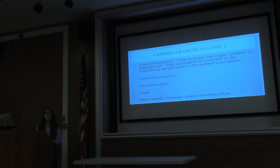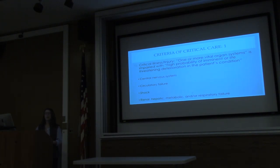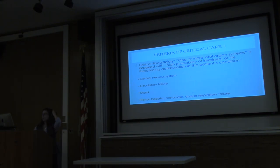According to CPT, there are three main tenets of critical care. First, there has to be a critical illness or injury which involves one or more vital organ systems that are impaired with a high probability of imminent or life-threatening deterioration of a patient's condition. They've given some examples of organ systems, but we know it can be any single or combination of organ systems.